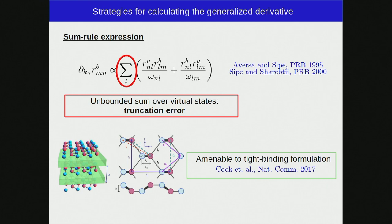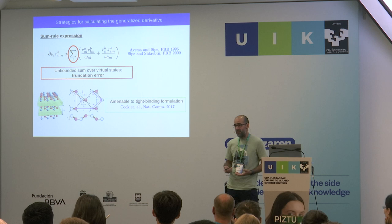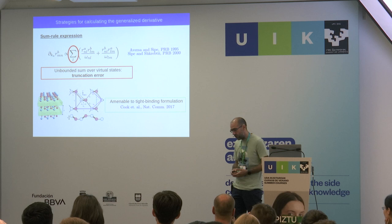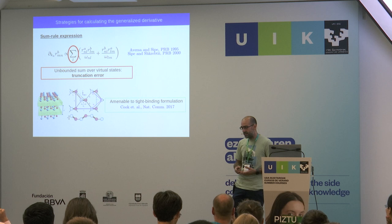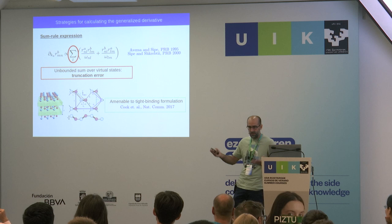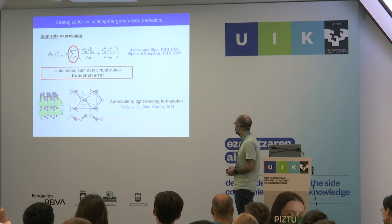There are sum rule expressions: one can write the covariant derivatives as a sum over states involving only dipoles. This has the advantage that dipoles we usually know how to compute, but the drawback is an unbounded sum over virtual states. To converge it, you need to sum over all virtual states, which means computing many empty states in ab initio calculations — potentially very time-demanding, especially for complex systems like nanotubes.